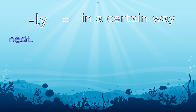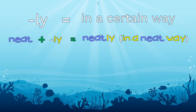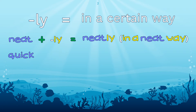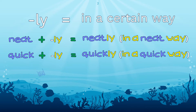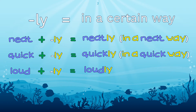The first base word we're going to look at is the word neat. When I add the suffix -ly to it, it makes the new word neatly, which now means in a neat way. If I add the suffix -ly to the base word quick, it makes the word quickly, which means in a quick way. And if I add the suffix -ly to the base word loud, it makes the word loudly, which means in a loud way.